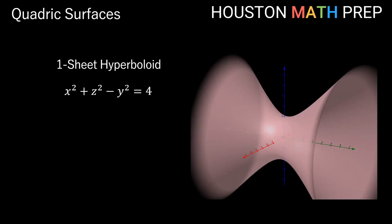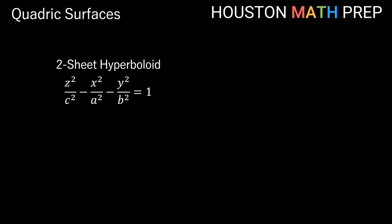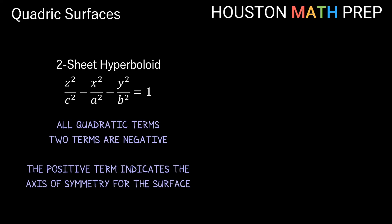If we change which term is negative on the left side, the axis of symmetry shifts to that variable's direction — so with the y term negative, the y-axis runs through the center. Now, for the hyperboloid of two sheets, the equation has two negative quadratic terms instead of one. Notice that this looks like the ellipsoid equation but with two terms negative. In the one-sheet hyperboloid we have one negative term; for the two-sheet hyperboloid, we have two negative terms. In this case, the positive term indicates the axis of symmetry.